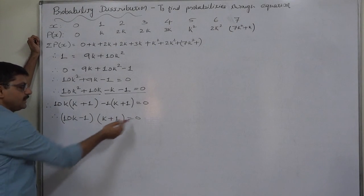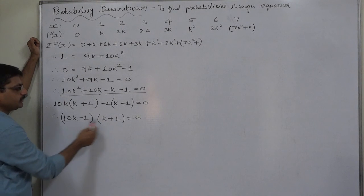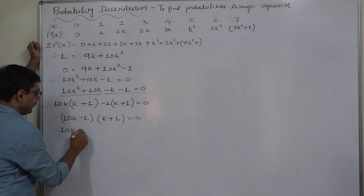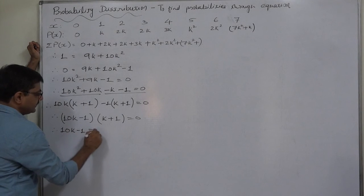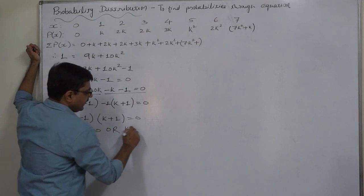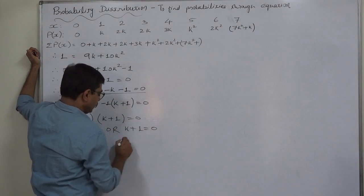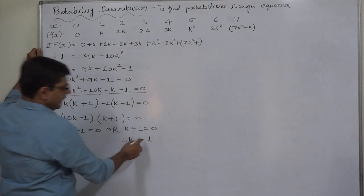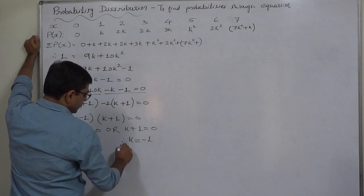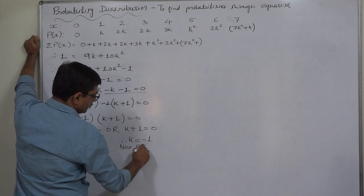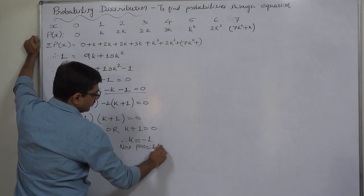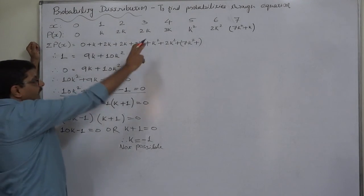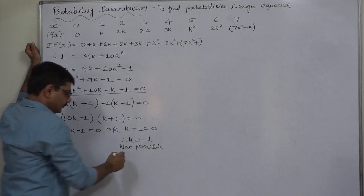That means either (10K minus 1) or (K plus 1) is zero, since the product of these two is zero only if any one of them is zero. Therefore, either 10K minus 1 equals 0 or K plus 1 equals 0. But K equals minus 1 is not possible, because K is a probability and probability can never be negative.